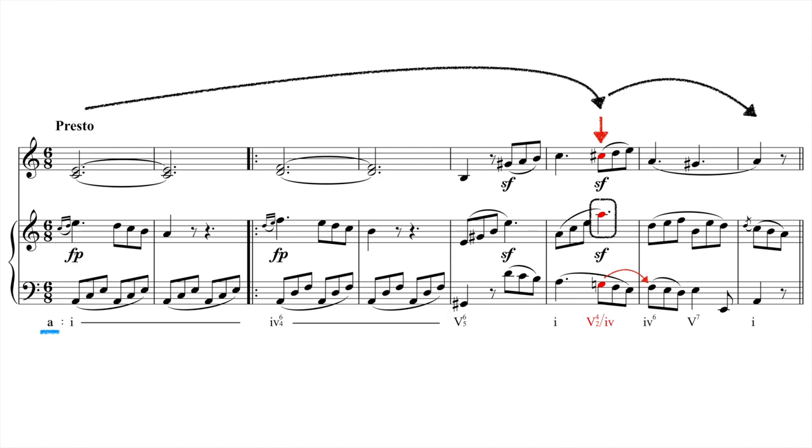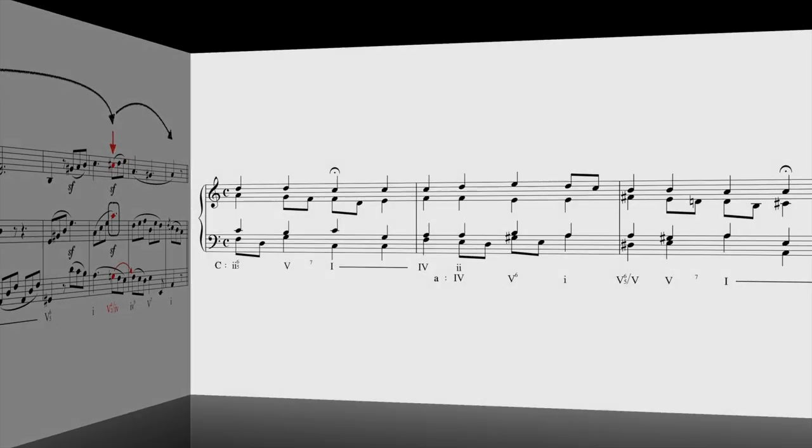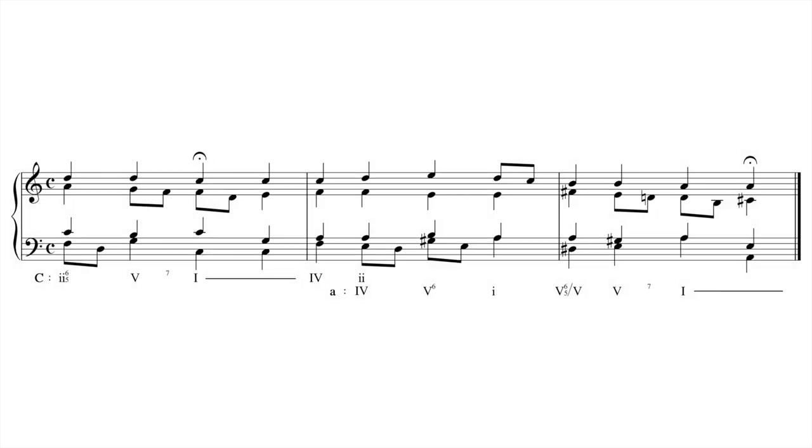Here's another example. The ending of Bach's chorale, Ach wie flüchtig, ach wie nichtig. The chorale as a whole is in A minor. The previous phrase, ending of the first bar in the example here, ended in C major.